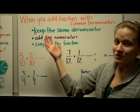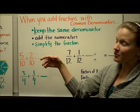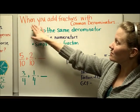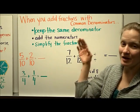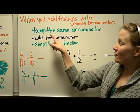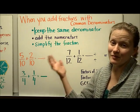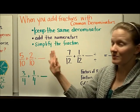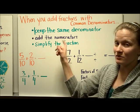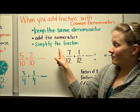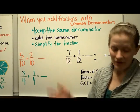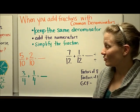So the steps that you can follow based on those few examples that we just had. When you add fractions with common denominators, you want to do 3 things. First, you want to make sure that you keep the same denominator. Whatever your denominator already was, keep it the same. Then you're going to add the numerators. And finally, your last step is to simplify the fraction. Make sure that it's in simplest form.